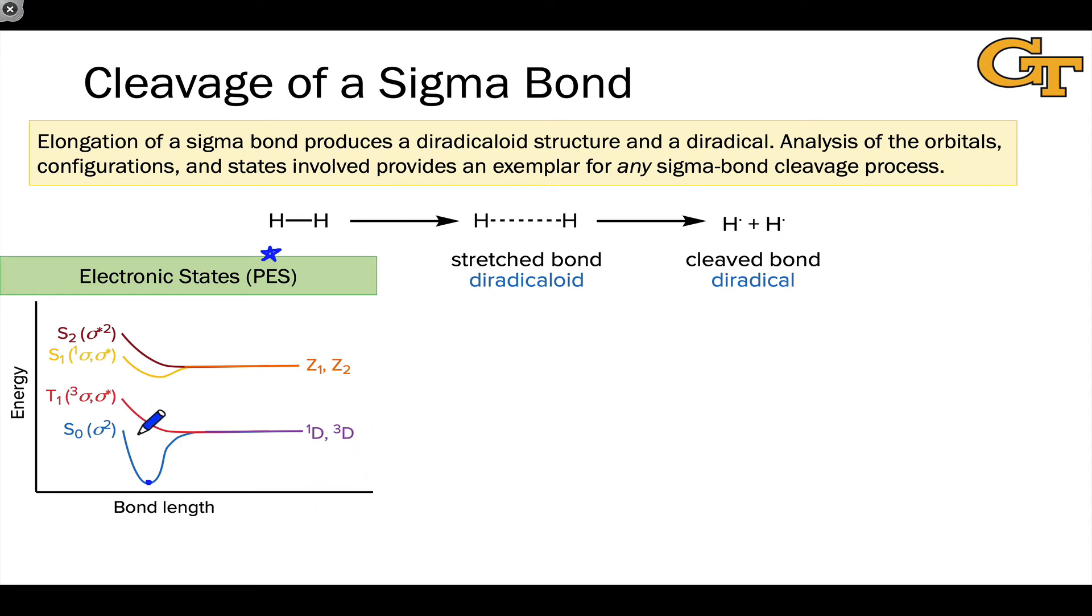For the triplet state, there is no equilibrium geometry because the electrons have parallel spins. As they move farther and farther apart from one another, electron repulsion decreases, and there is no stable structure for triplet sigma-sigma* hydrogen. And this is true of any triplet sigma-sigma* molecule. The triplet state always moves downhill in energy as the atoms of the bond move apart.